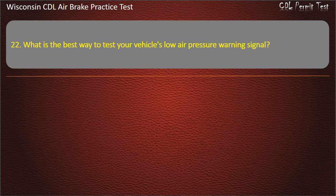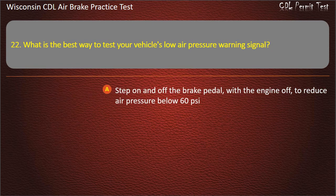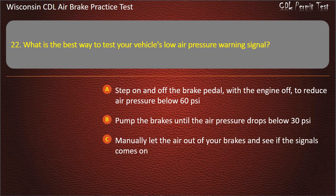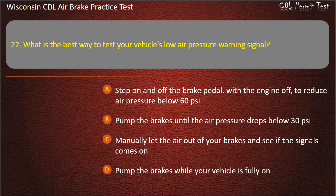Question 22. What is the best way to test your vehicle's low air pressure warning signal? Step on and off the brake pedal, with the engine off, to reduce air pressure below 60 pounds per square inch. Pump the brakes until the air pressure drops below 30 pounds per square inch. Manually let the air out of your brakes and see if the signal comes on. Pump the brakes while your vehicle is fully on. Answer: Step on and off the brake pedal, with the engine off, to reduce air pressure below 60 pounds per square inch.